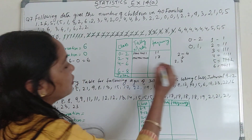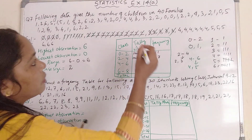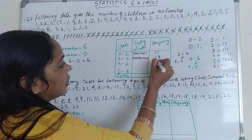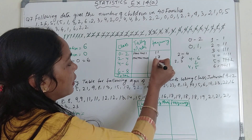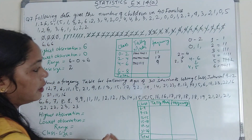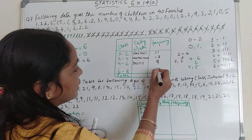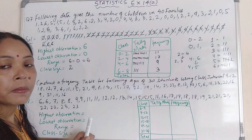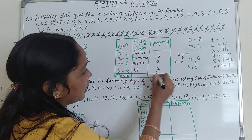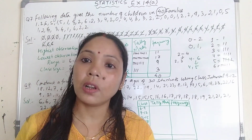Now see the next interval, 4 to 6. Here we include 4 and 5, excluding 6. Counting gives: 1, 2, 3, 4, 5, 6, 7, 8, 9 — so the frequency is 9. Write down the tally marks for 9. For interval 6 to 8, we count only 6. How many 6s? 1, 2, 3 — so the frequency is 3. Write tally marks for 3. Now add all frequencies: 11 plus 17 plus 9 plus 3 equals 40. This 40 and the given total of 40 should be the same — then only we can say our solution is correct.